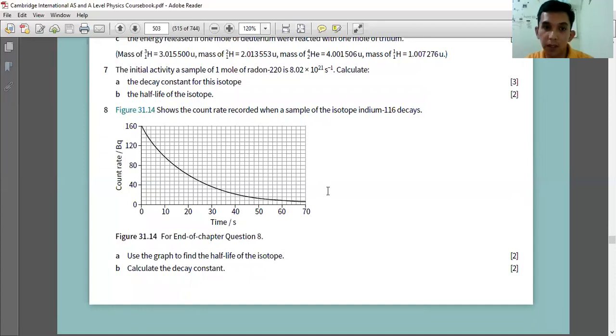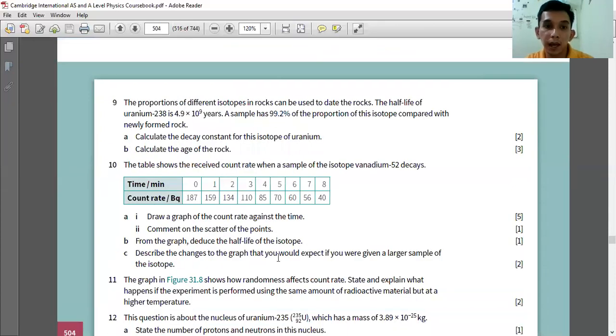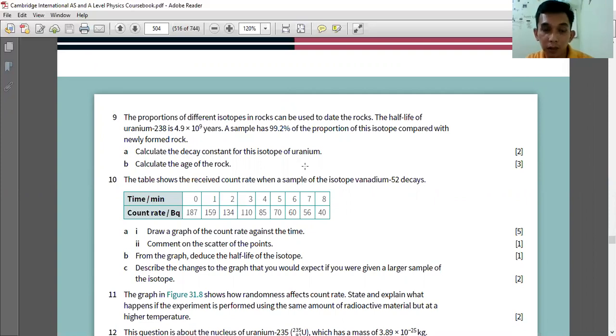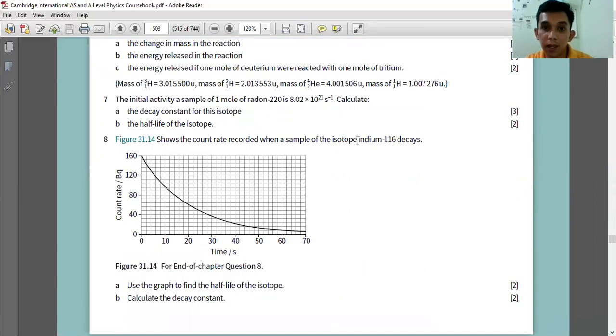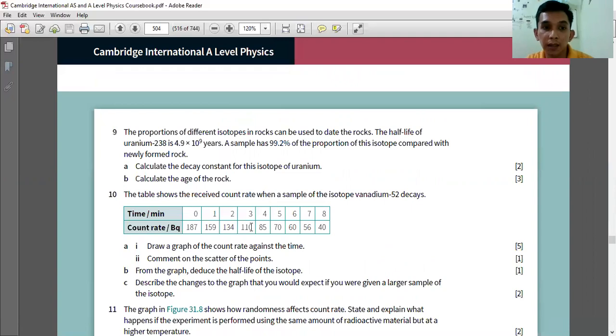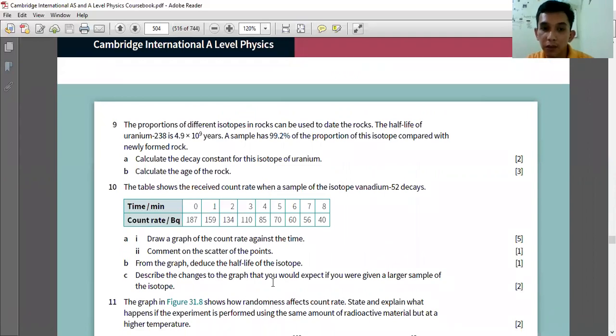Comment on the scatter of the points. So the graph will look like a smooth curve. If it is scattered a bit, then explain why it is scattered. And from the graph, use the half-life of the isotope. Yes, you can deduce the half-life the same way like we deduce the half-life for this indium-116.